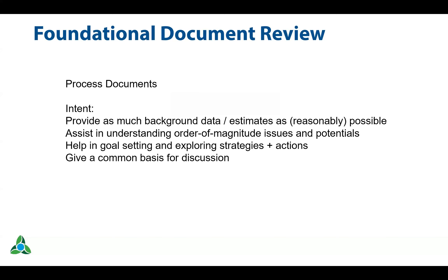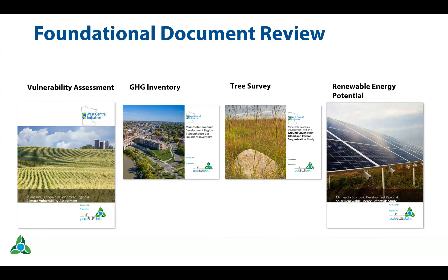The intent is to provide background data to help understand the order of magnitude of issues or potentials in each of the sectors, help in creating goals, exploring strategies and actions, and to give a common basis for discussion. There are four research documents: the vulnerability assessment, the greenhouse gas inventory, a ground cover study covering tree canopy, heat island, and carbon sequestration, and the renewable energy potential study. All of those are us exploring and gathering data relevant to climate change considerations for the region.